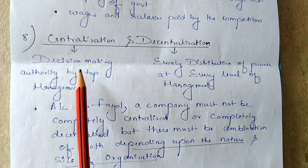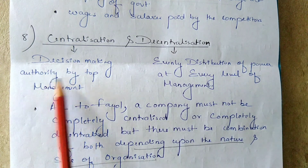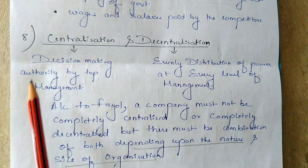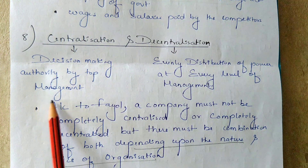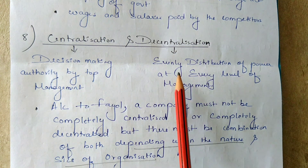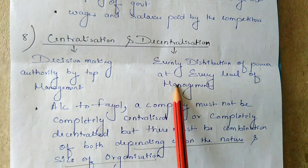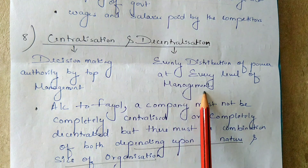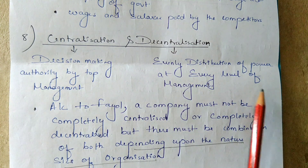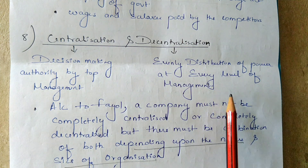Now what is centralization? Centralization means where the decision making authority is with the top management — all decisions related to the business organization will be taken by top management. Decentralization means evenly distribution of power at every level of management: top level, middle level and lower level.